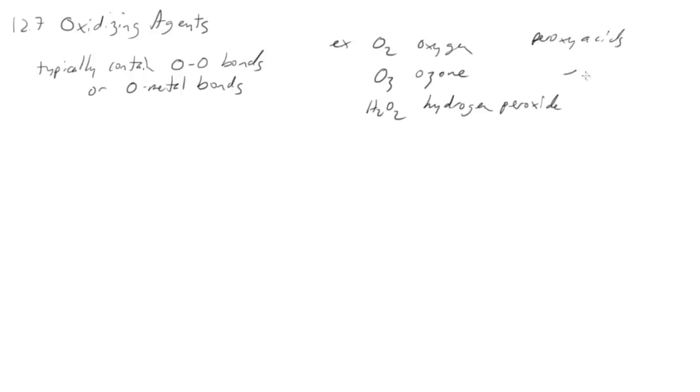Peroxyacids are similar to carboxylic acids except after our carbonyl, typically we have an OH that would make it a carboxylic acid. But to make it a peroxyacid we have our carbonyl, then an oxygen to oxygen bond, and then the hydrogen.